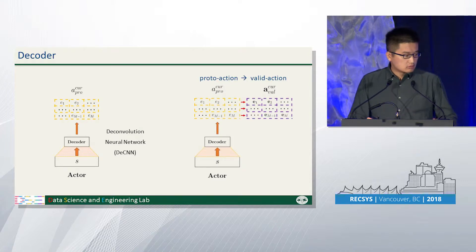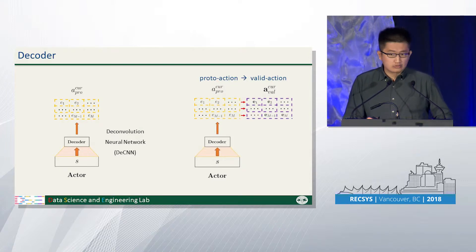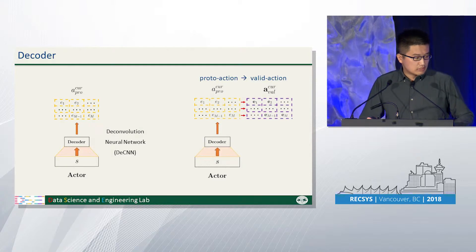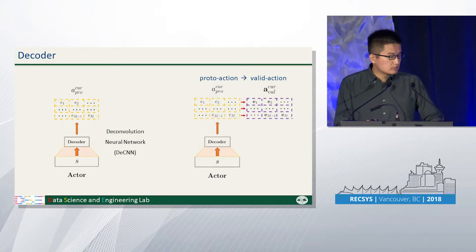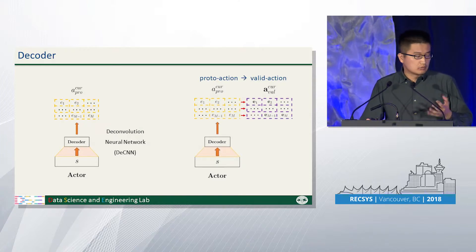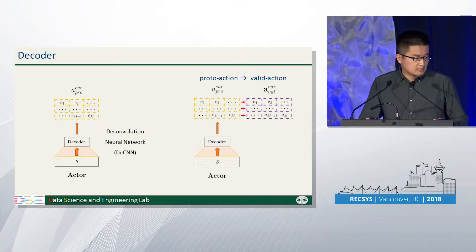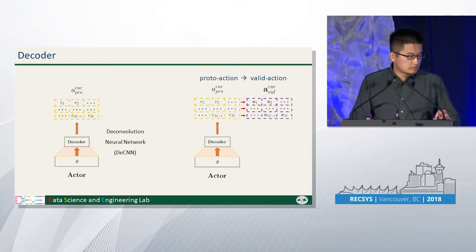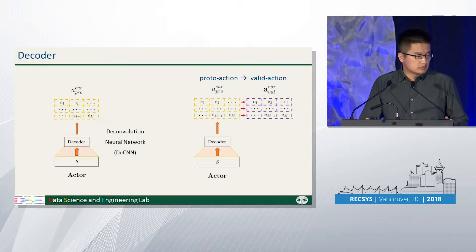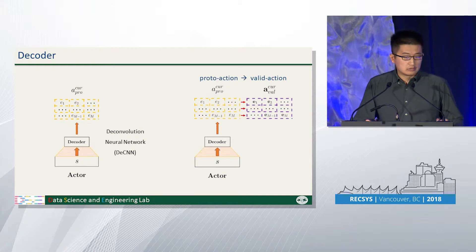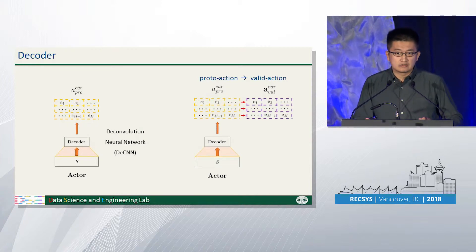For the decoder, given the vector of the user's current preference, the decoder aims to generate a page of recommendations and display them in one page. This is an inverse process of what the CNN does. We introduce a deconvolutional neural network to generate the recommendations and display them in one page. It is worth noting that the generated item embedding may not exist in the real item space, so we need to map this generated embedding to the valid embedding in the system.